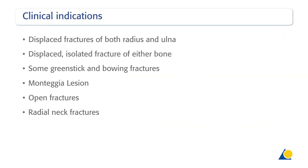Clinical indications for the Essin include: displaced fractures of both radius and ulnar; displaced isolated fracture of either bone; some greenstick and bowing fractures; Monteggia lesion; open fractures; and radial neck fractures.